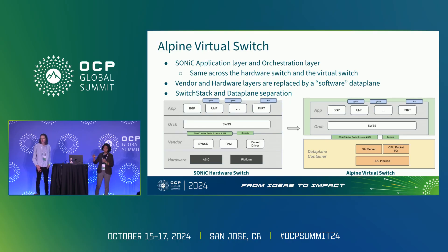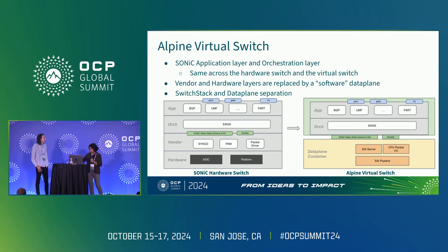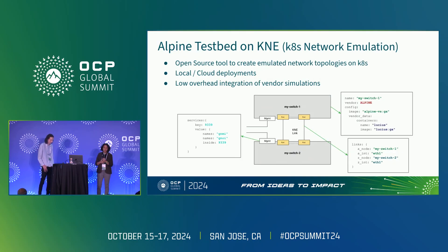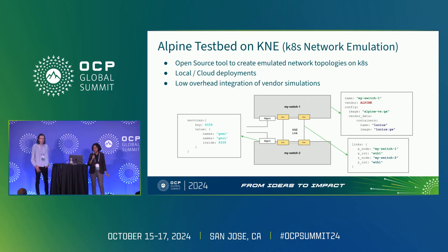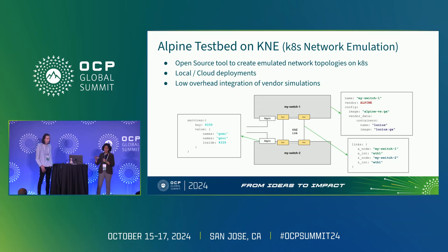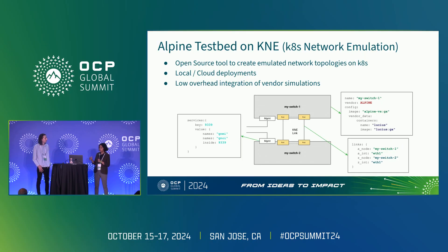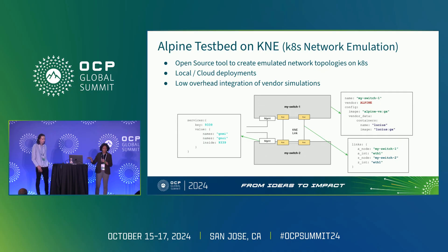Both of these containers together form the Alpine virtual switch and are deployed as a single unit as a Kubernetes pod. To deploy an Alpine testbed we use KNE, which stands for Kubernetes Network Emulation. It is an open-source tool to create emulated network topologies in Kubernetes, providing a simple way of defining topologies in text protobuf. It also provides local and cloud deployment, and its simple design lets us integrate different vendor simulations into the same topology.